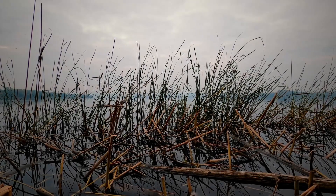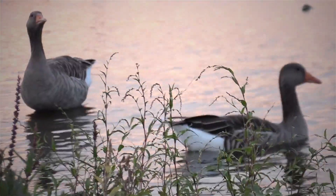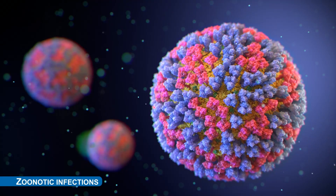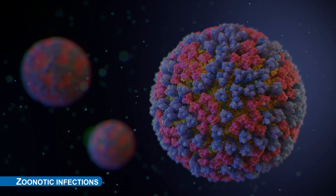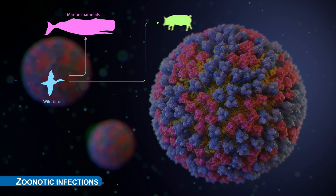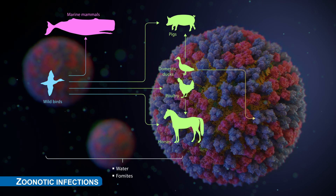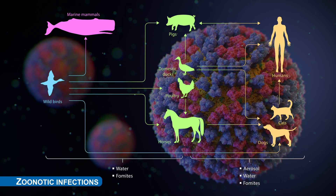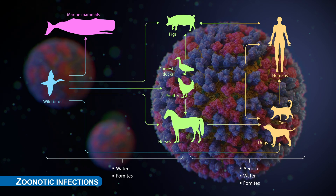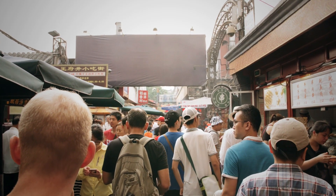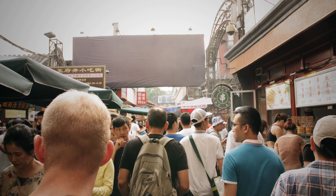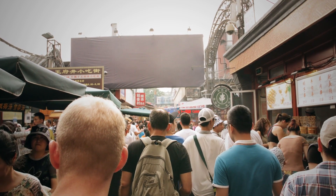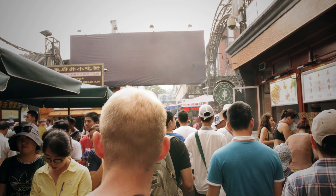Influenza A viruses originate in wild birds. Some of them may spread to other animals, causing zoonotic infections. When acquiring the ability to infect and spread among humans, there is the potential for a serious epidemic to occur.